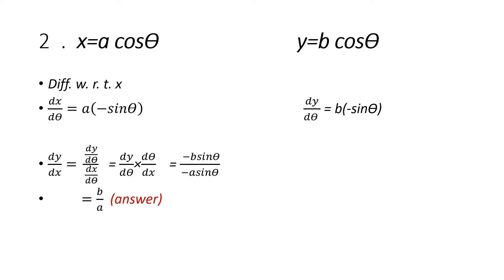Now question number 2. We are given x equal to a cosθ and y as b cosθ. Differentiating with respect to x on both sides, let us take the case of x first. We will calculate dx upon dθ. Be very careful — you have to write dθ in the denominator. So it is a as it is multiplied by the derivative of cosθ, which is minus sinθ. So you get dx by dθ equal to −a sinθ.